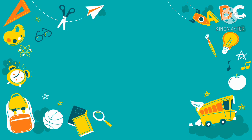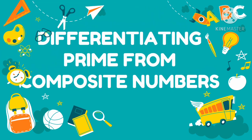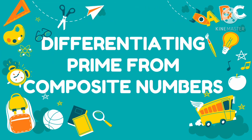In the previous lesson, you have learned how to identify factors and multiples of a given number up to 100. So this time, I will discuss to you the difference between a prime number and a composite number. And this topic is about differentiating prime from composite numbers.